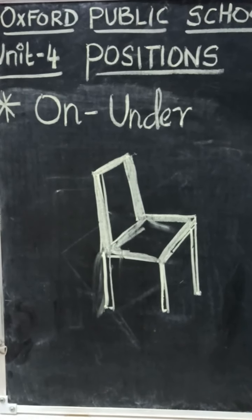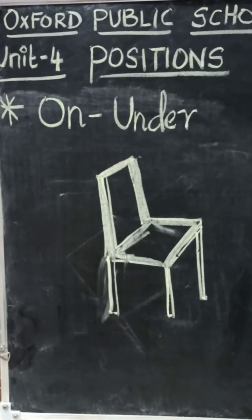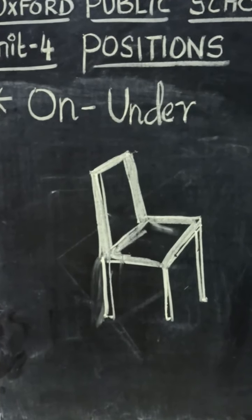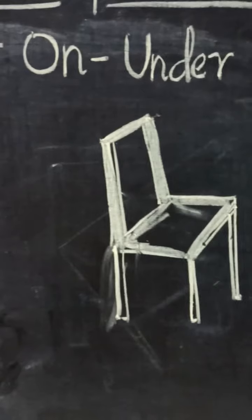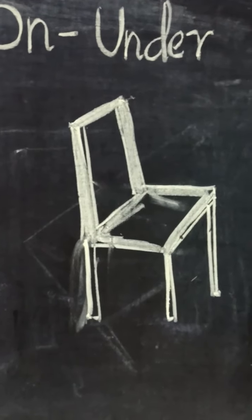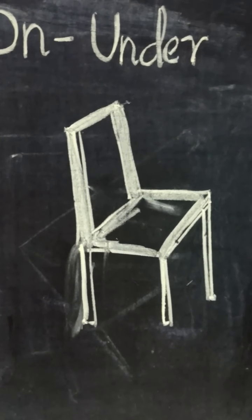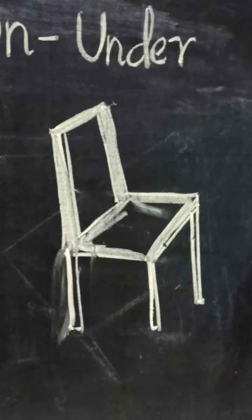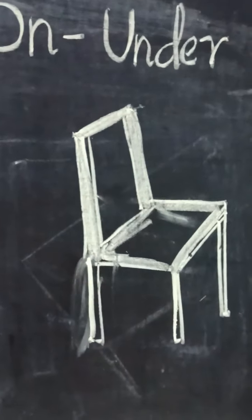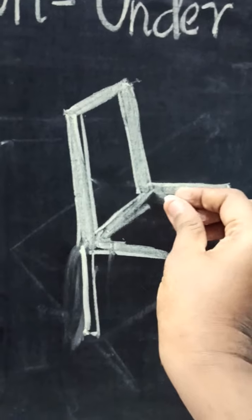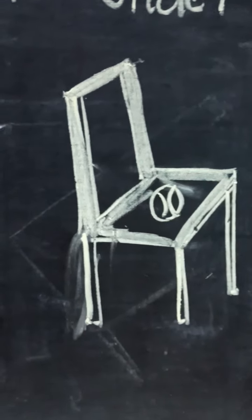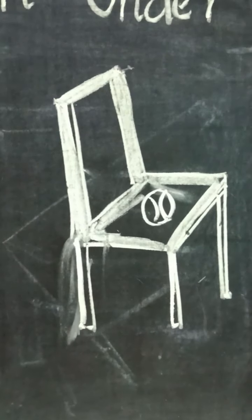The next position is on-under. Are you able to see a chair on the board? I have drawn a chair. We are going to imagine how to use these positions. Consider a ball. I am going to keep a ball on the chair. On means on top of it, keeping it on top of the chair. The ball is on the chair.